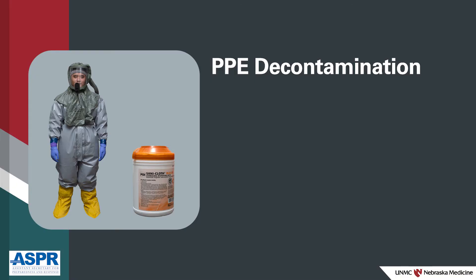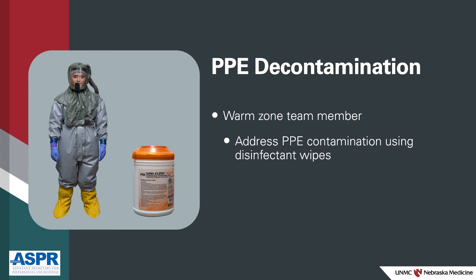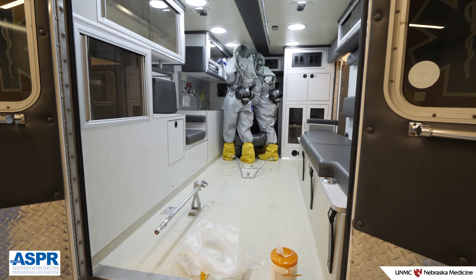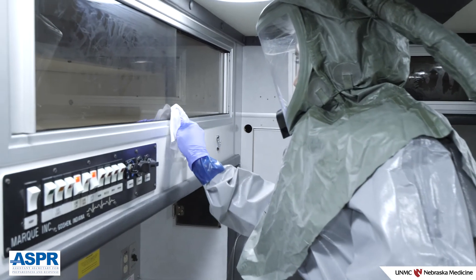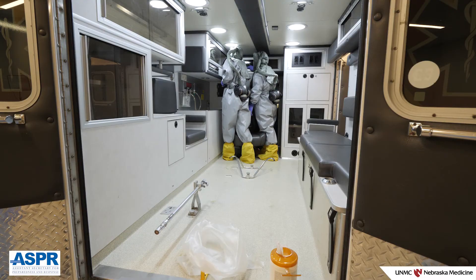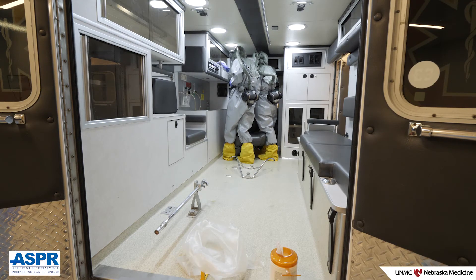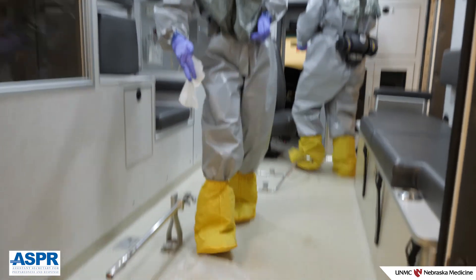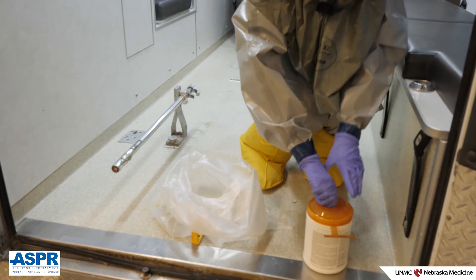The warm zone team member remaining in the ambulance should now address any PPE contamination using disinfectant wipes. The remaining exterior hot zone team member should enter the ambulance to assist the warm zone team member in manually disinfecting the interior of the patient care space using disinfectant wipes. Both should limit mechanically generated aerosols while wiping the space. Begin at the front of the patient care space and systematically wipe top to bottom, front to back. Verbally calling out surfaces will help you be consistent in cleaning. Drop used wipes into an autoclave bag positioned behind you, which will be removed, clipped and placed in the bins when finished.